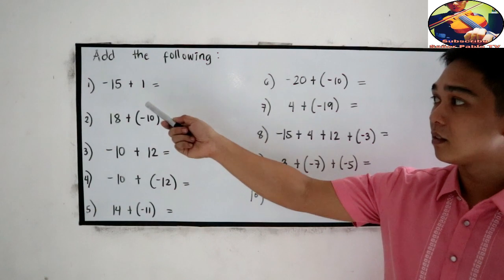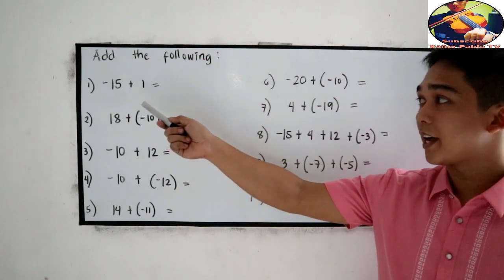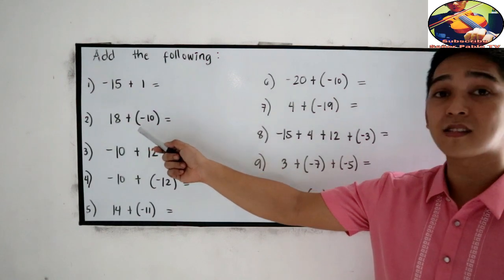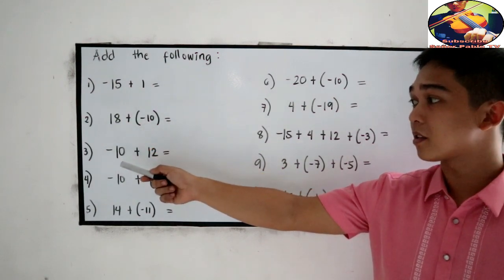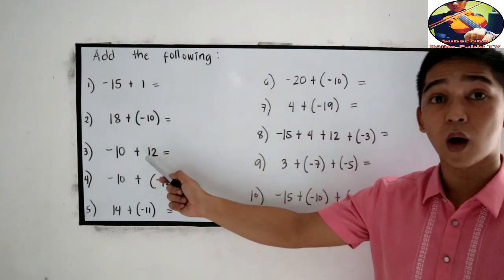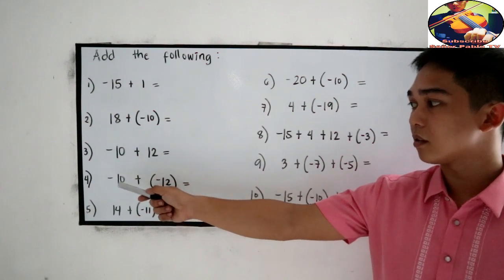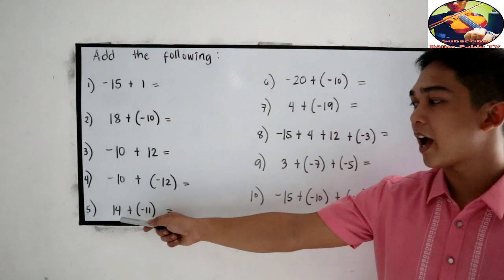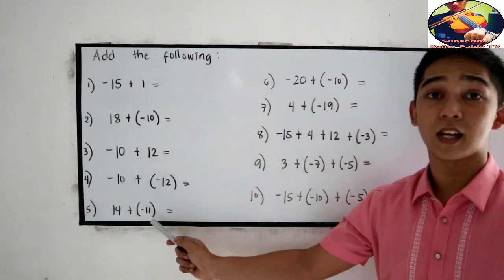Add the following. Number 1: negative 15 plus 1. Number 2: negative 18 plus negative 10. Number 3: negative 10 plus 12. Number 4: negative 10 plus negative 12. Number 5: 14 plus negative 11.